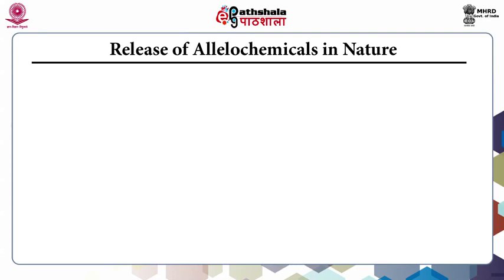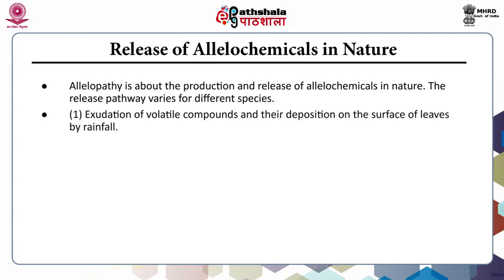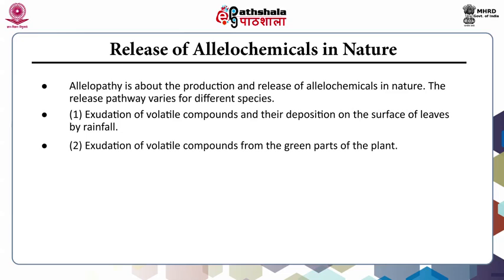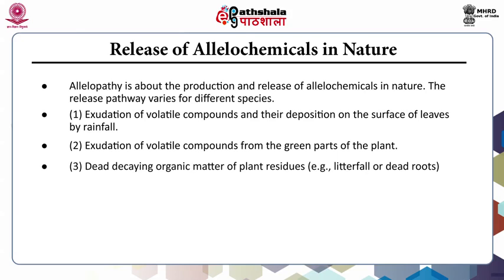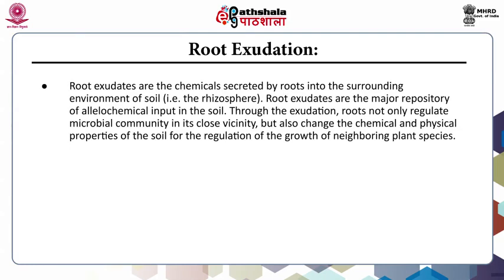Regarding the release of allelochemicals in nature: the release pathway varies for different species. Pathways include exudation of volatile compounds and their deposition on leaf surfaces by rainfall, exudation from green parts of the plant, dead decaying organic matter and root exudation. Root exudates are chemicals secreted by roots into the surrounding soil environment (rhizosphere) and are the major repository of allelochemical input in the soil. Through exudation, roots not only regulate microbial communities but also change the chemical and physical properties of soil for regulation of neighboring plant species growth.